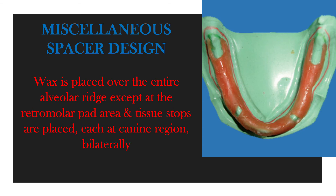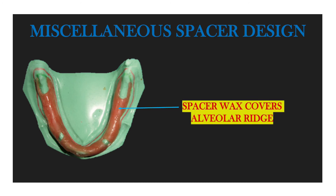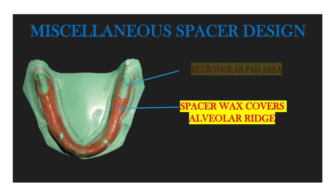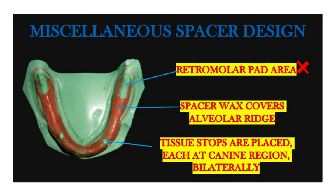Tissue stops are placed at the canine region bilaterally. Looking at the figure, the spacer wax covers the entire alveolar ridge, which helps guide the orientation of the tray. In this type of spacer design, the retromolar pad area is not covered and tissue stops are placed at the canine region bilaterally to help guide the orientation of the tray.